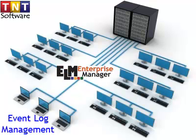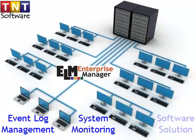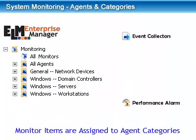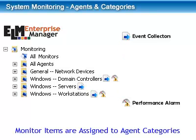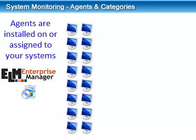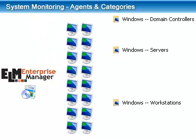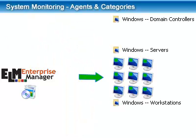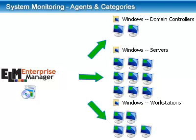ELM is a centralized event log management and system monitoring software solution. Monitor items such as event collectors and performance alarms are assigned to different agent categories within ELM. Agents are installed on or assigned to your systems and grouped into these categories, such as Windows servers, domain controllers, and workstations.